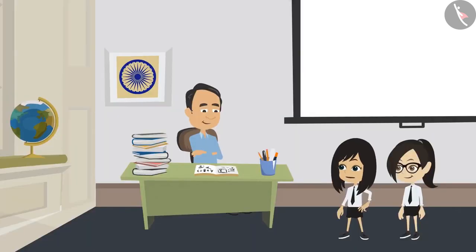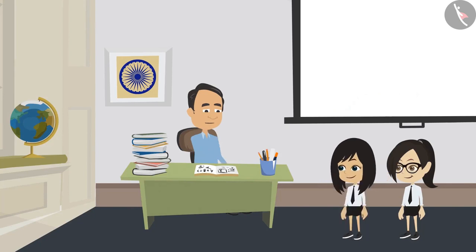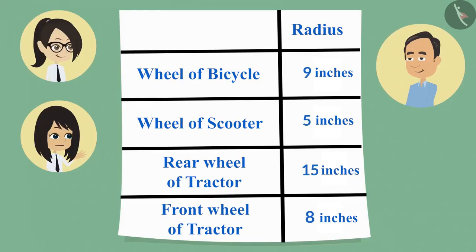Now I can tell whether the front wheel of the tractor is bigger or the wheel of the bicycle. Please tell. Sir, the wheel of a bicycle is bigger because its radius is 9 inches, which is more than the radius of the wheel of the tractor, which is 8 inches.